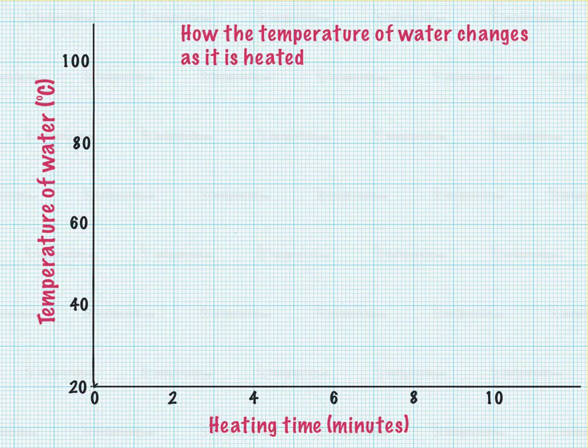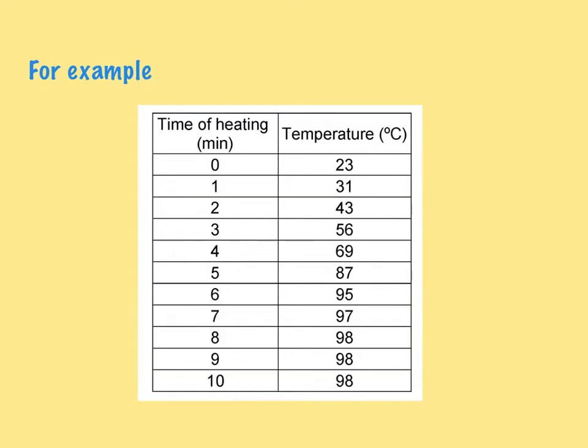We can see here that we have got a lot of data that someone has gathered about heating water. You can see that before we started heating it was 23, after one minute of heating it had gone up to 31, after two minutes it was now 43, three minutes is 56, and so on. It's most interesting to see down here it actually slows down, but that's a different story. So let's try to put some of these numbers onto our graph.